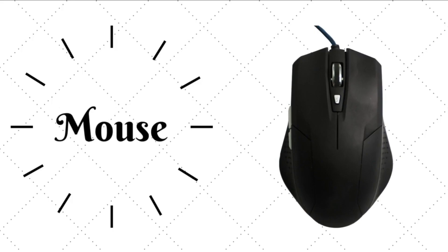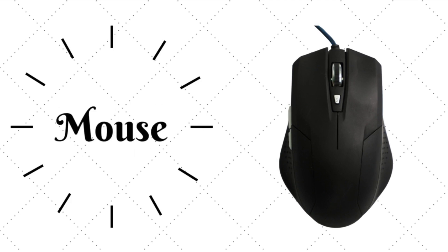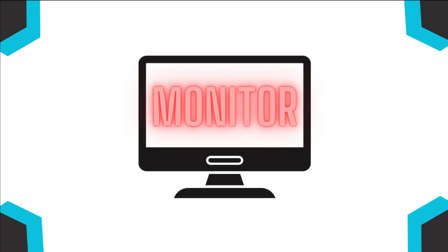2. Mouse: A pointing device used to move the cursor on the screen and interact with graphical user interfaces. 3. Monitor: A display device that shows visual output from the computer.